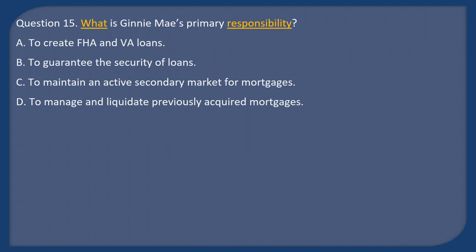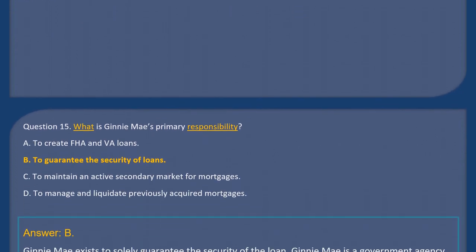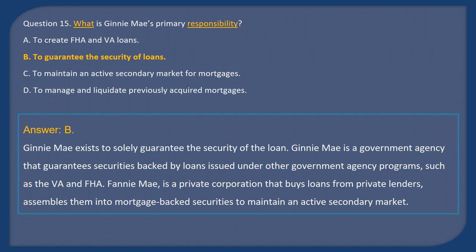Question 15: What is Ginnie Mae's primary responsibility? A) To create FHA and VA loans, B) To guarantee the security of loans, C) To maintain an active secondary market for mortgages, D) To manage and liquidate previously acquired mortgages. Answer: B. Ginnie Mae exists solely to guarantee the security of loans. It is a government agency that guarantees securities backed by loans issued under other government agency programs such as the VA and FHA. Fannie Mae is a private corporation that buys loans and maintains an active secondary market.